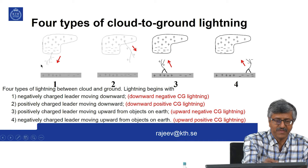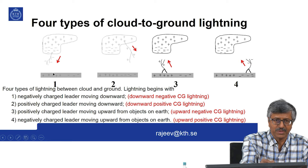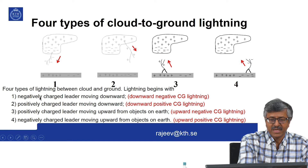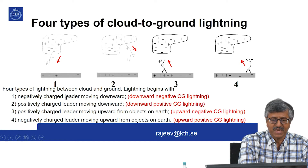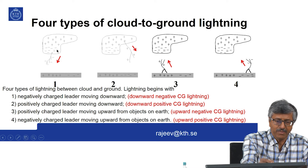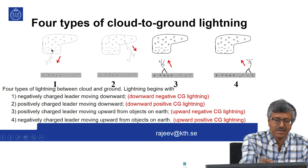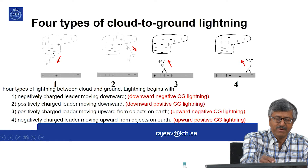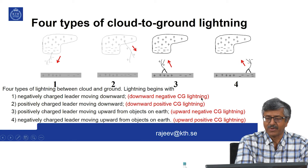In the first example, you have negative charge in the cloud, positive charge around the ground, and the lightning begins with a negatively charged leader moving downward — this is downward negative cloud-to-ground lightning. At the end of the lightning, the negative charges are neutralized because as the leader comes down and makes connection to the ground, positive charges move up and neutralize that region. So you call it negative cloud-to-ground lightning.